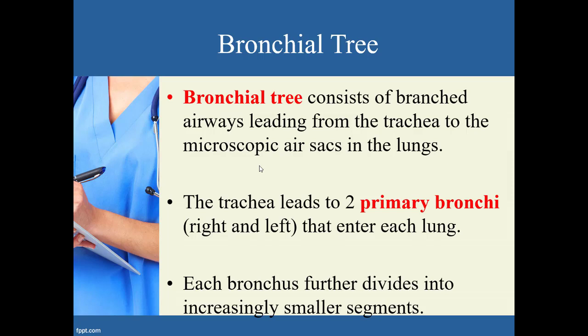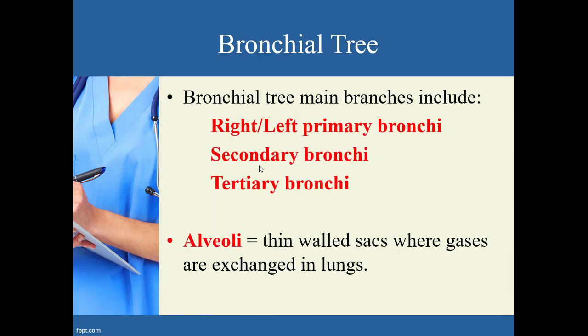The next structure is the bronchial tree — a structure consisting of several branched airways coming off the trachea, getting progressively smaller until you get to the individual air sacs within the lungs. The initial branching of the trachea is what's called the primary bronchi — bronchi is the plural of bronchus — so you have a right bronchus and a left bronchus, referred to collectively as bronchi.